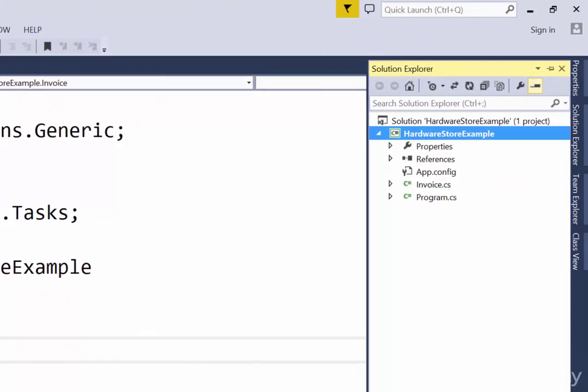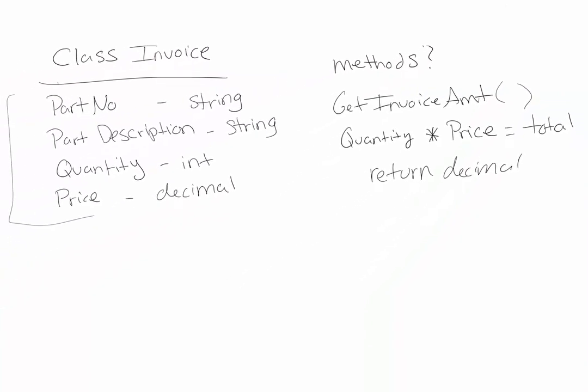When thinking about your plan for your class and which properties you're going to have inside of it, you can also determine which properties are okay to auto-implement and which ones you'll want access to in order to validate or do error checking inside of the set. In this case, part number and part description don't need validation, so I will be auto-implementing those two properties. However, quantity and price will need some validation since they're numerical values, and we want to ensure we don't get any negatives or inappropriate values. These two will be fully implemented with private variables so we can have access to the set accessor for error checking.